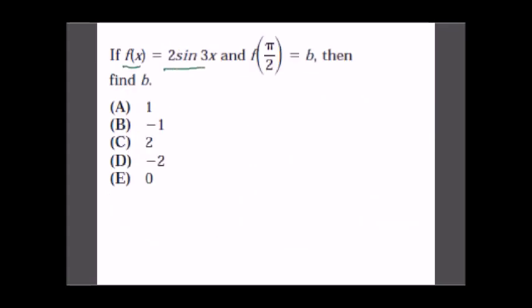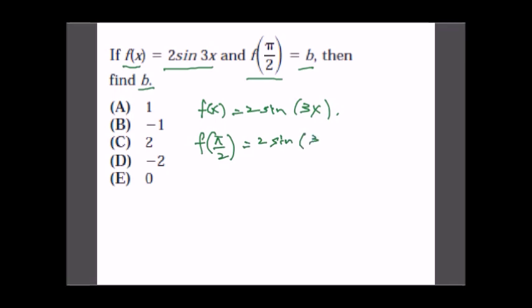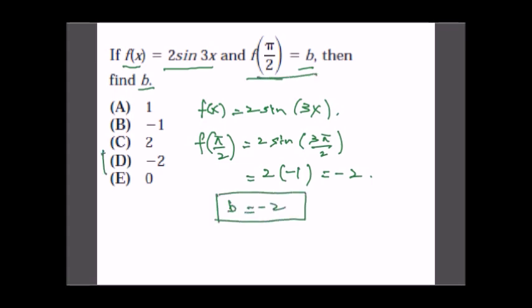If F(x) = 2sin(3x) and F(π/2) = B, find B. Substituting x = π/2: F(π/2) = 2sin(3π/2) = 2·(−1) = −2. Since F(π/2) = B, we get B = −2. The answer is choice D.